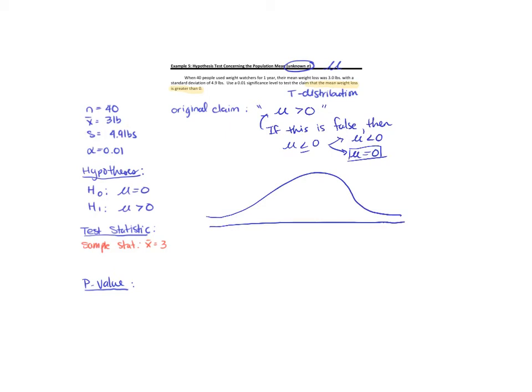So even though this looks like a normal distribution, it's not. This is the t-distribution. The tails are a little bit thicker than the normal distribution. The center works the same way as the normal distribution. And because the original claim and the alternative hypothesis is that mu is greater than zero, we know that we have a right tail test. The shaded region represents the critical region.